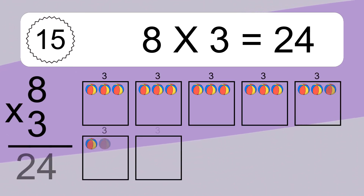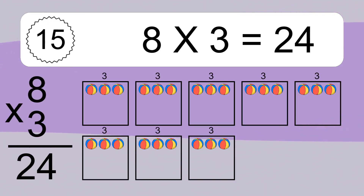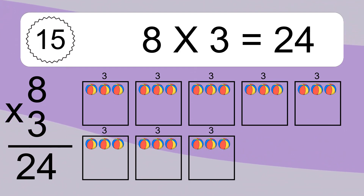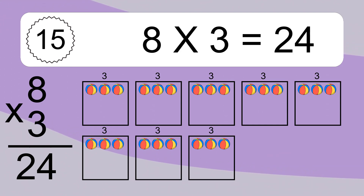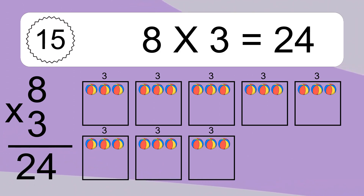8 times 3 equals what? 8 times 3 equals 24. We have 8 boxes, and each box has 3 colorful balls inside. If you count all the balls in all the boxes together, you will have 8 times 3 balls. This equals 24 balls.